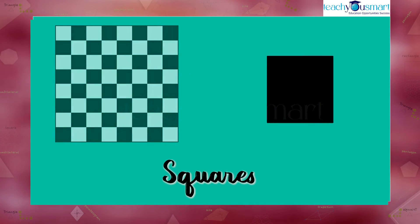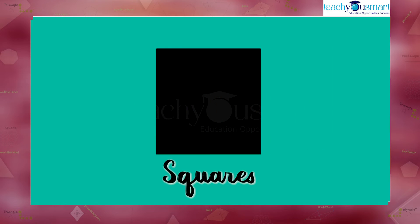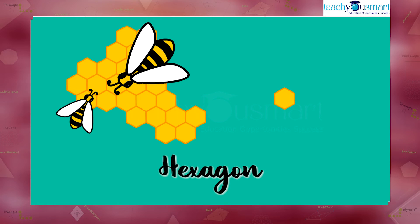Example: squares on a chessboard, hexagon on a honeycomb.